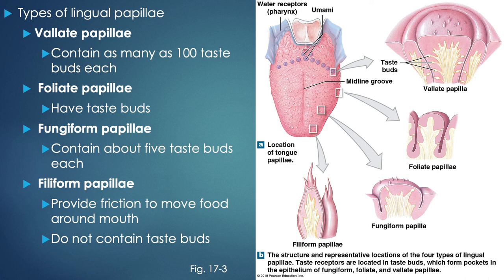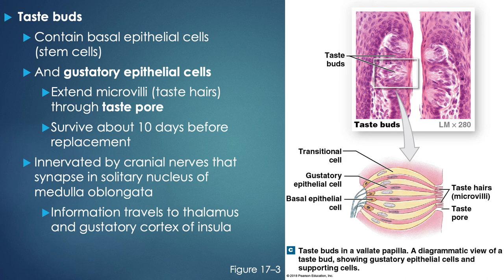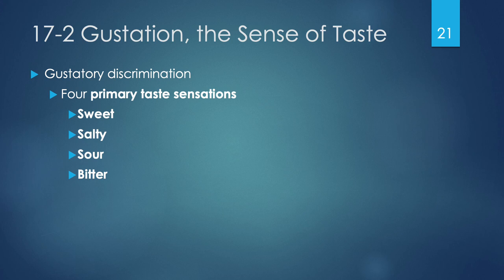Because our tongue is epithelialized, we have cell turnover, so we need basal epithelial cells, also known as stem cells, to replenish and create new cells. We have gustatory epithelial cells that extend microvilli — known as taste hairs — through a taste pore. Gustatory epithelial cells only survive about 10 days before they're replaced. These taste buds are innervated by cranial nerves and synapse in the solitary nucleus of our medulla oblongata. The information travels to the thalamus and eventually to the gustatory cortex of our insula, which is an area of our cerebrum that is more medial. We can detect four primary taste sensations: sweet, salty, sour, and bitter.